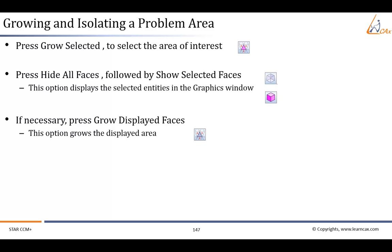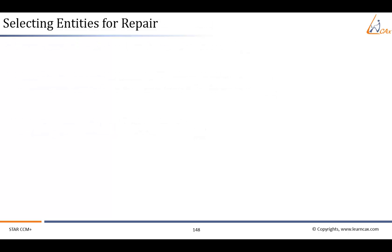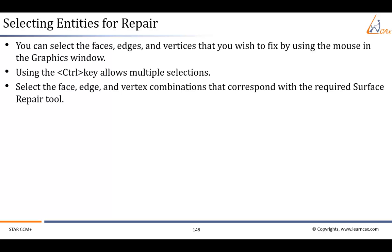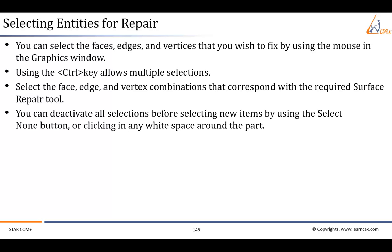After isolating the error, we have to select entities in order to repair them. You can select the faces, edges, and vertices that you wish to fix by using the mouse and the graphics window. Using the Control key allows multiple selections. Select the face, edge, and vertex combinations that correspond with the required surface repair tool. You can deactivate all selections before selecting new items by using the 'Select None' button or clicking in any white space around the part.